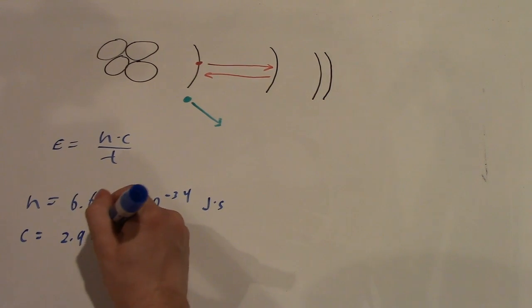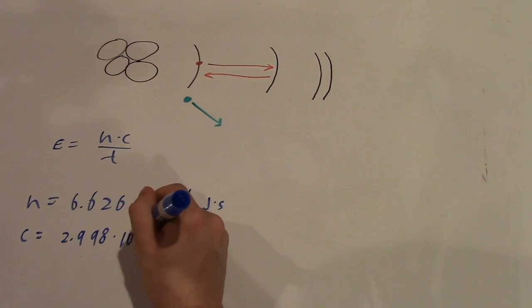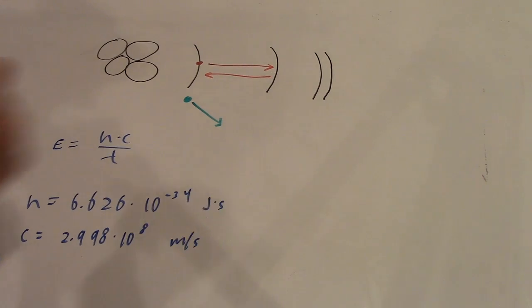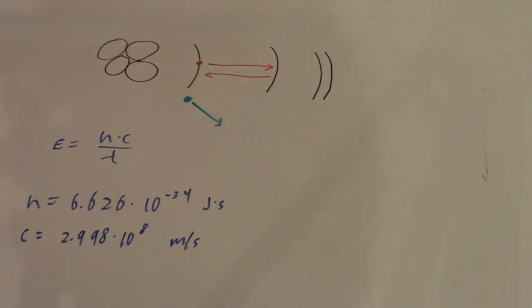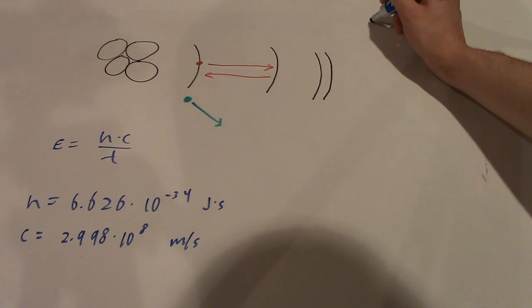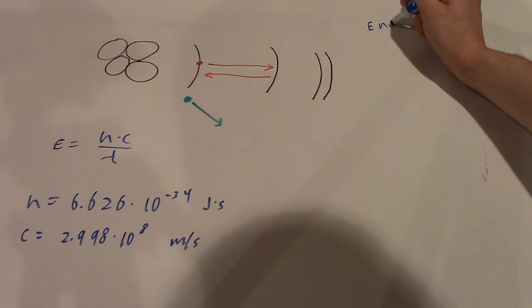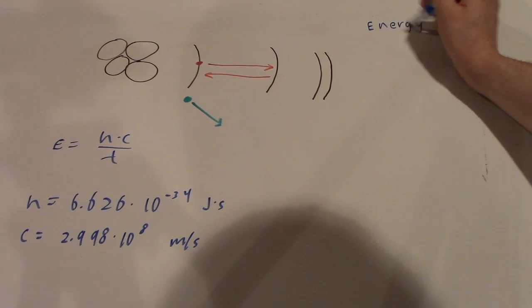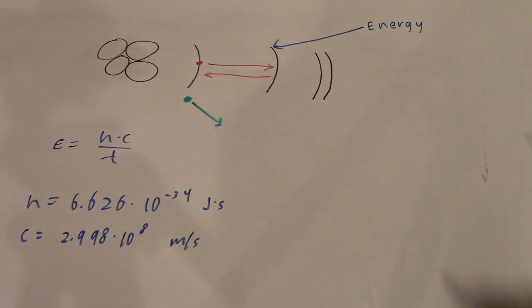As such, any given element, when provided with energy, will release photons of a specific set of wavelengths, and only these wavelengths. Similarly, that same element can only absorb photons with one of those specific wavelengths. The main thing to take away from all this is that light is created whenever an atom is given energy.